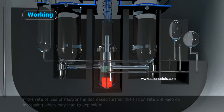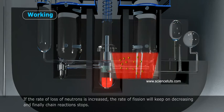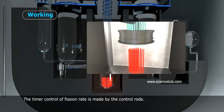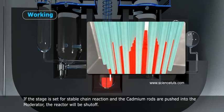If the rate of loss of neutrons is increased, the rate of fission will keep on decreasing and finally chain reaction stops. The finer control of fission rate is made by the control rods.